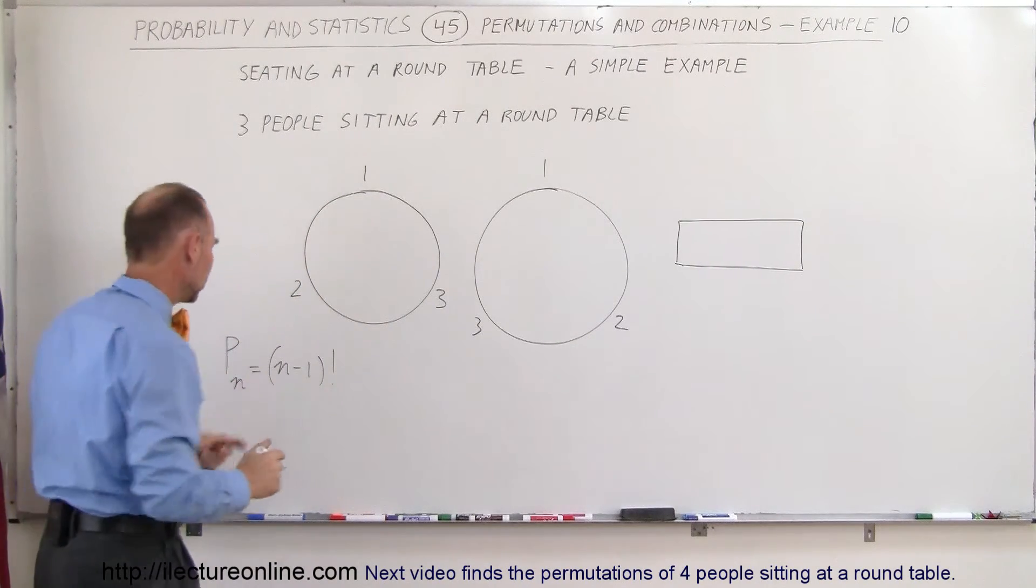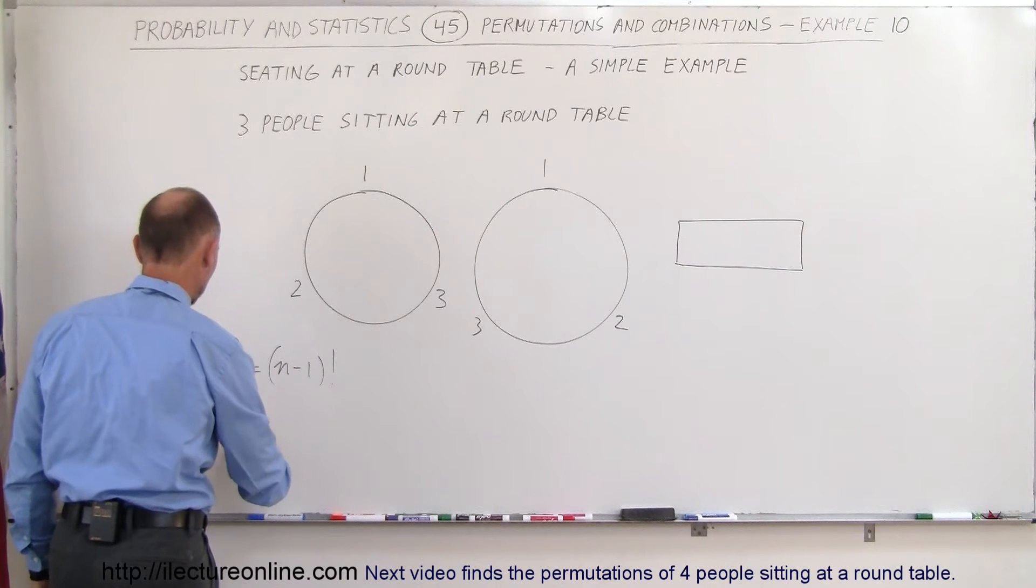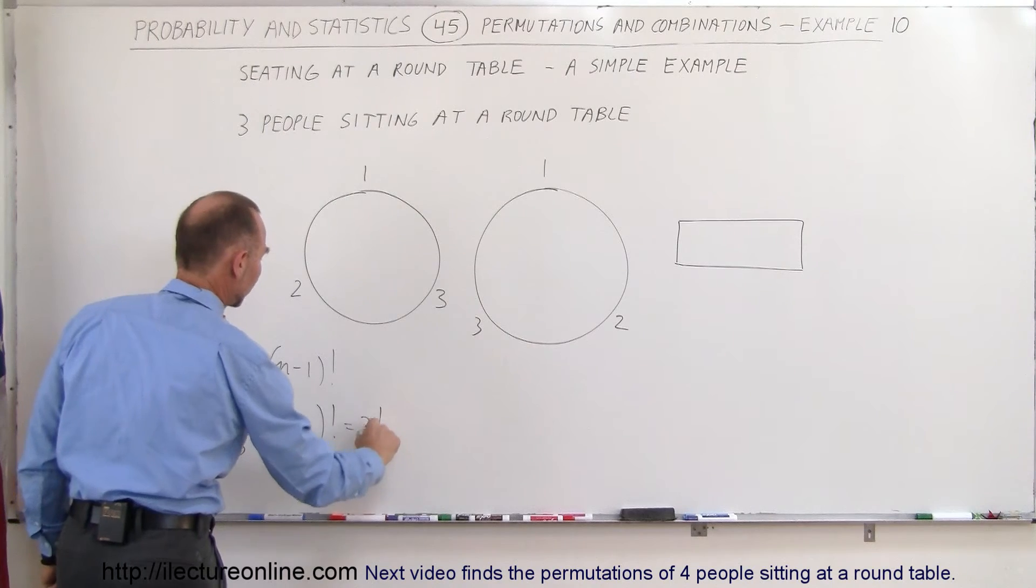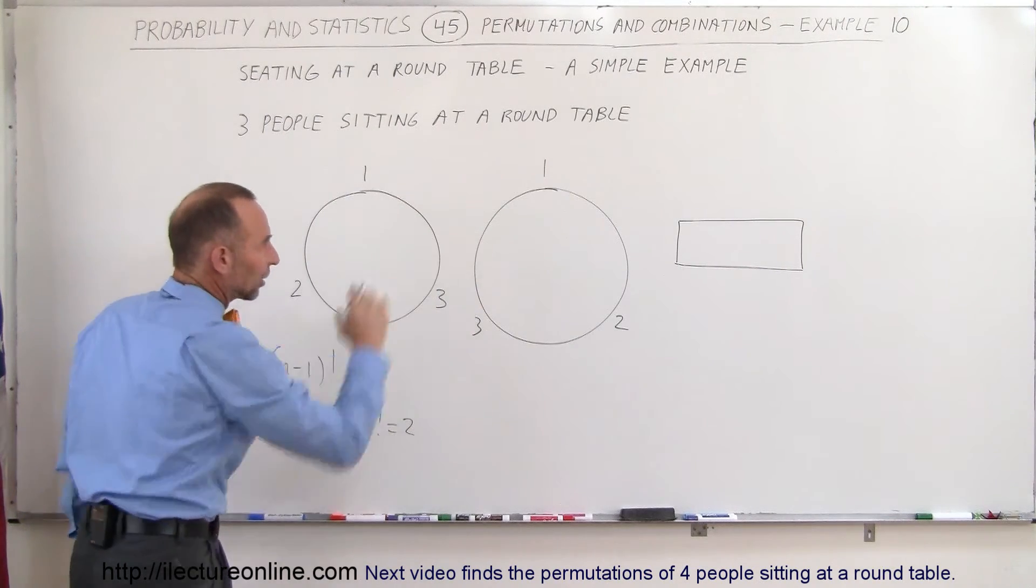The equation, or the formula shows us that, in this case, the number of permutations with 3 people is equal to 3-1 factorial, which is 2 factorial, which is equal to 2, which is exactly what we saw.